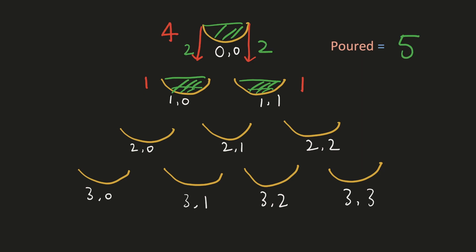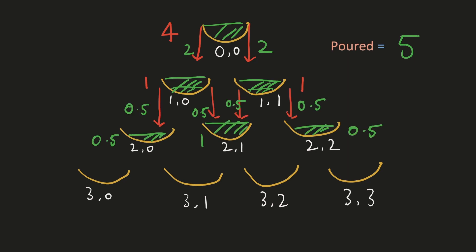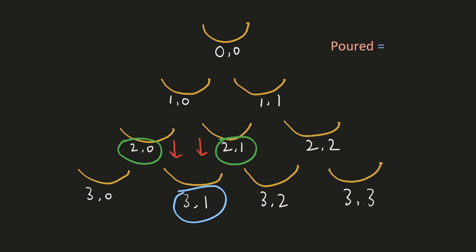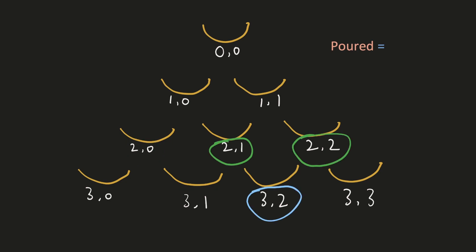When we pour 5 units, the lower glasses receive 2 units each, so the extra 1 unit spills to the lower row. If we focus on a given glass, it is being filled by the spillage from the two glasses above it. Similarly, each glass in the lower rows is filled by spillage from its two parent glasses above.